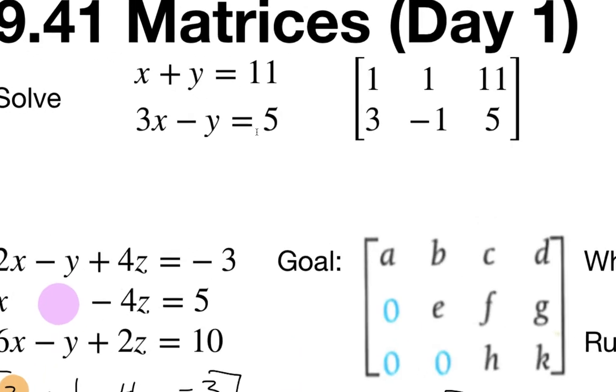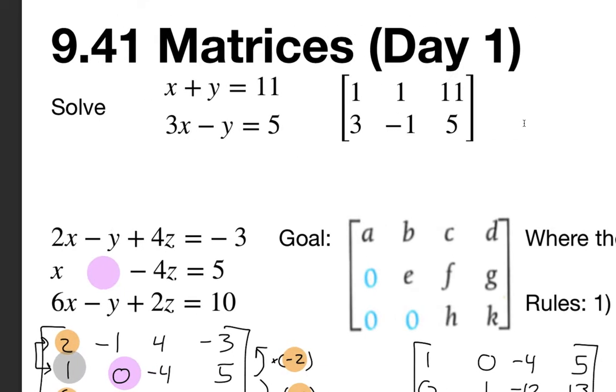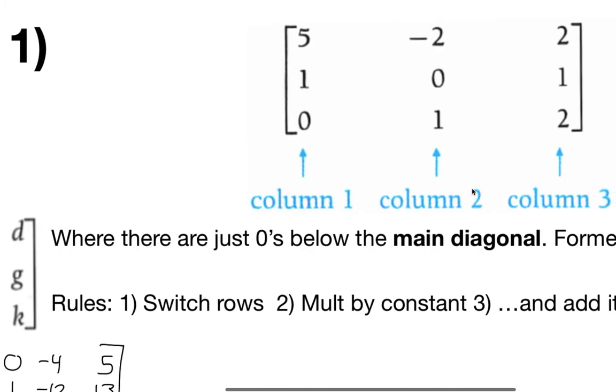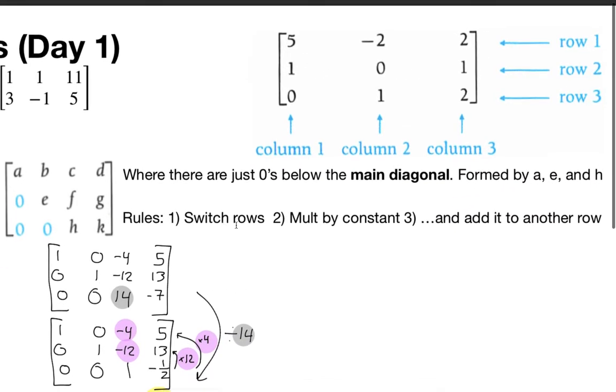Now we're going to do all the same things we did before. You're going to be able to change rows if you want, you're going to be able to multiply a row by a number, or you're going to be able to multiply a row by a number and then add it to another row. Those are the rules, the same as before. We're going to switch rows, multiply by a constant, and then add it to another row.